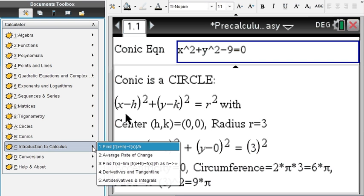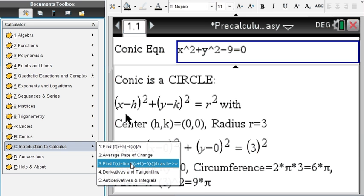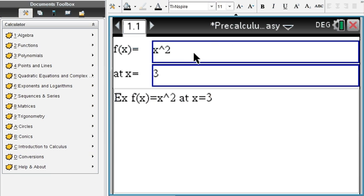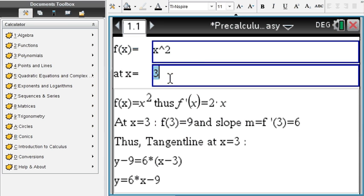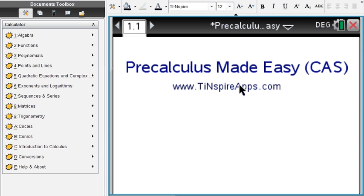Lastly, in precalculus you'll be introduced to calculus: average rate of change, instantaneous rate of change, derivatives, tangent lines. Say you enter a function like x² and you want to find the tangent line at x=3. You find the slope at point 3, which is 6, and the coordinates at x=3, which is 9. This gives you the tangent line as y=6x-9. Precalculus Made Easy has you all covered—all areas of precalculus step-by-step. This app and many more available at tinspireapps.com. Thanks for watching!